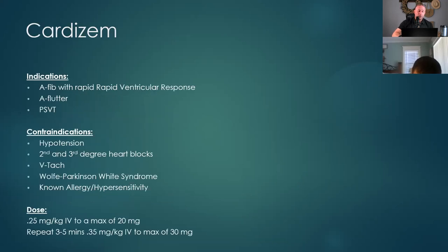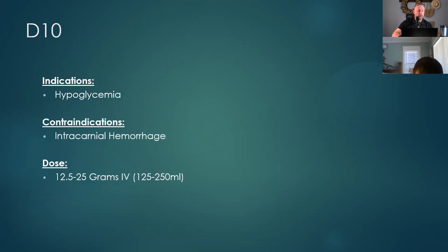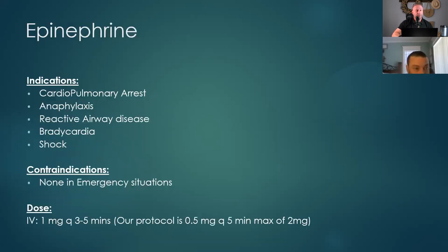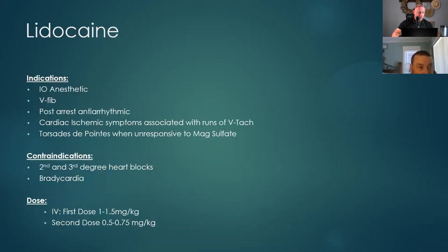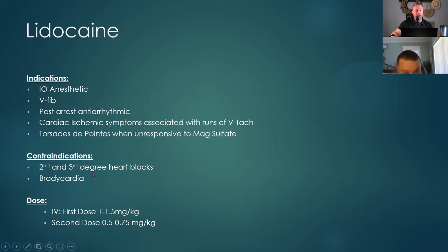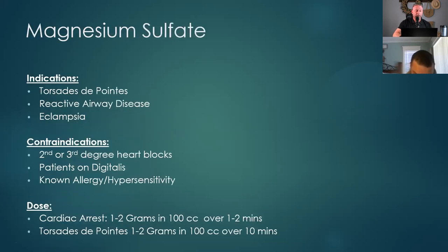Cardizem dose: 25 milligrams IV, repeat every 3 to 5 minutes, 0.35 milligrams per kilogram. Epi — we give it for everything. Lidocaine: first dose 1 to 1.5 milligrams per kilogram, second dose 0.5 to 0.75. Pretty much all these drugs are contraindicated in second and third degree blocks — just have that in mind as we go over blocks.